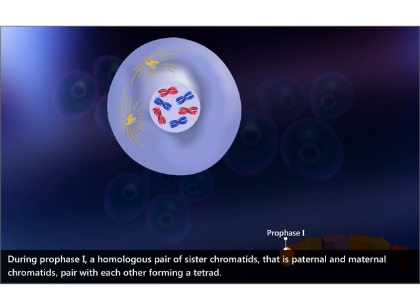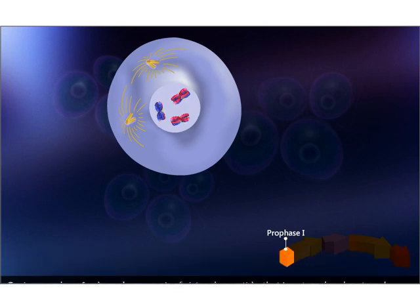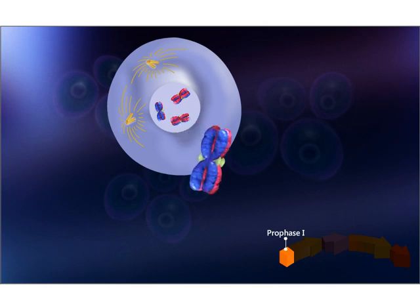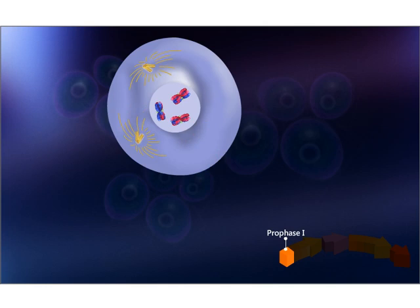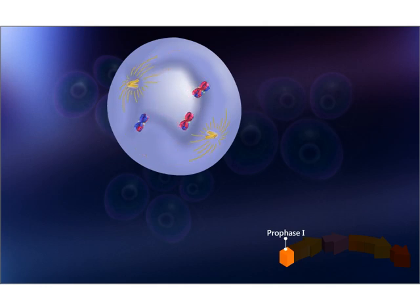During prophase one, a homologous pair of sister chromatids — that is, paternal and maternal chromatids — pair with each other, forming a tetrad. Once this structure is formed, the second event called crossing over takes place. During crossing over, a physical exchange between chromosome segments of non-sister chromatids occurs. This increases genetic diversity. Prophase one concludes when the duplicated centriole pairs move to opposite poles of the cell.